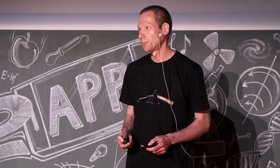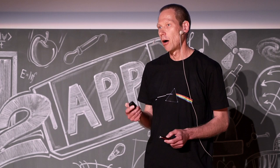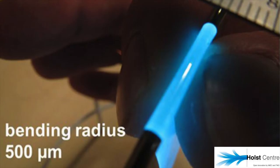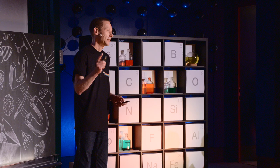But here comes the kicker. Perhaps the most intriguing aspect of organic light emitting diodes is the fact that they can be fabricated on flexible substrates and that they continue to emit bright light even when sharply bent. And this is what allows us to start thinking about flexible displays.